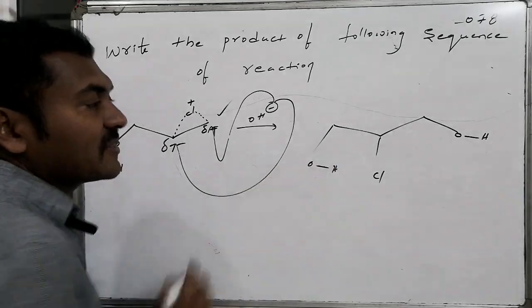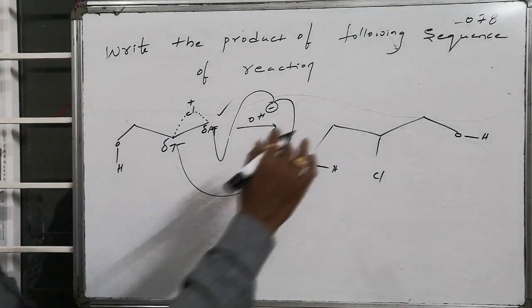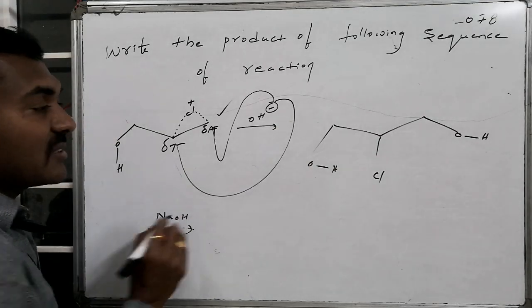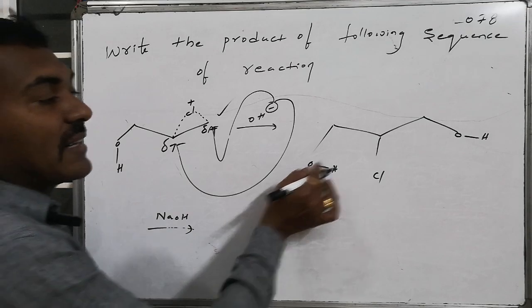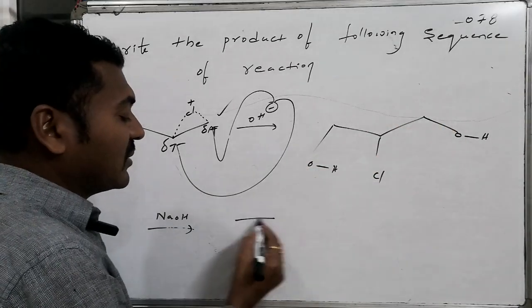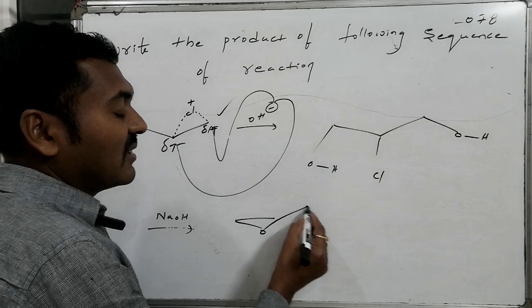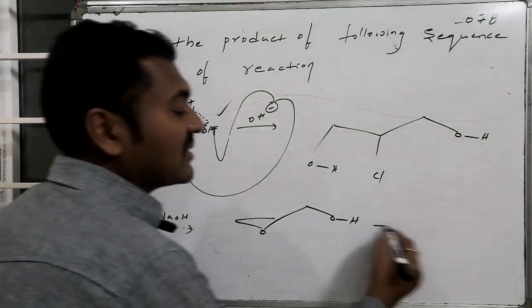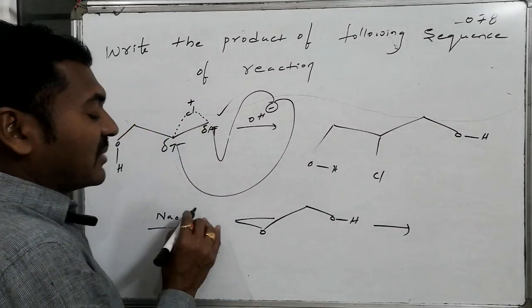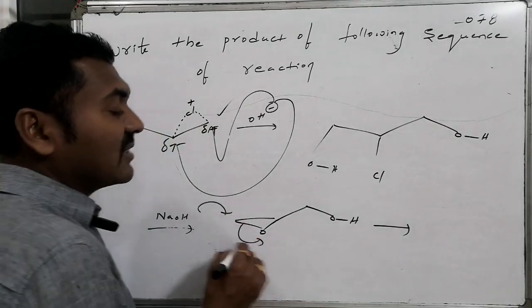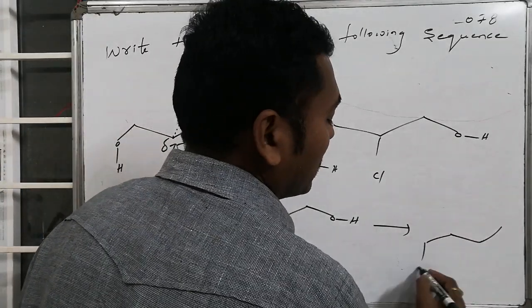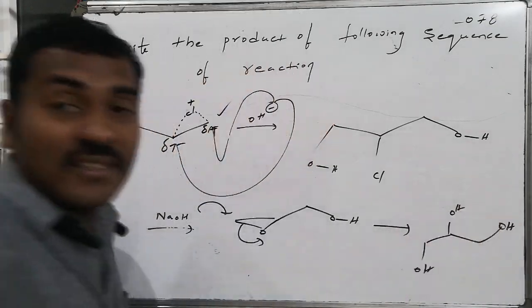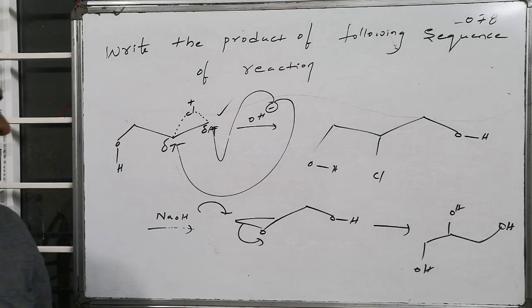In the last step, sodium hydroxide is used as a base. The chlorohydrin is converted to an epoxide via intramolecular displacement. Once the epoxide forms, O⁻ makes an attack from the terminal position, resulting in the formation of three hydroxyl groups — that is, glycerol formation takes place.